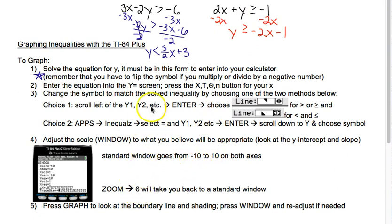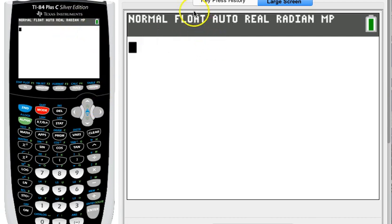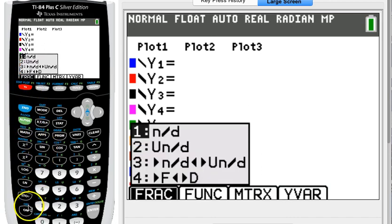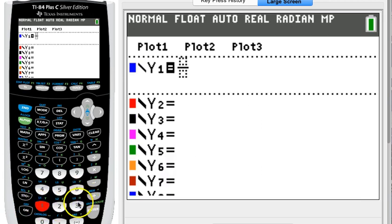When we actually go to graph these, to enter them into our y= screen, we're going to pretend like it's just a regular equation. So here's the calculator, we go to that y= screen. We've got 3/2 x + 3. Since it's a fraction, I'm going to use the shortcut alpha y= choice one, so type in the 3/2, here's the button I use for x, and then plus 3. So I've got that part done.